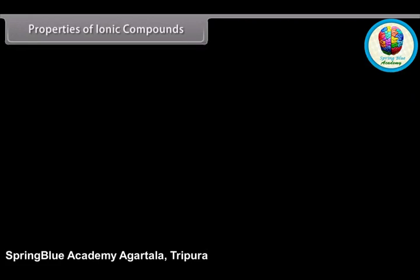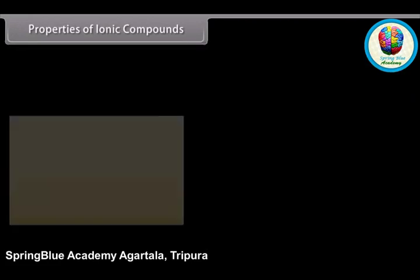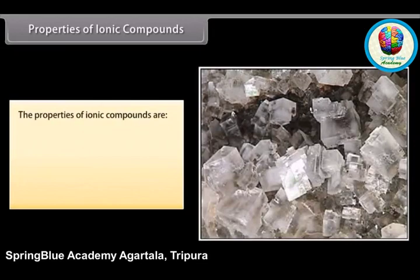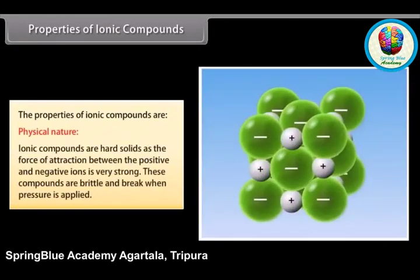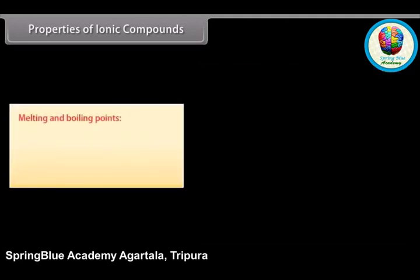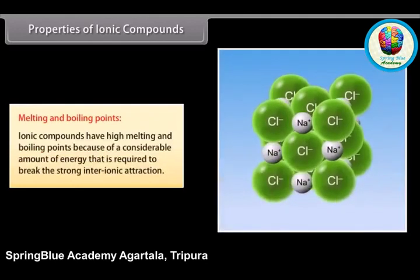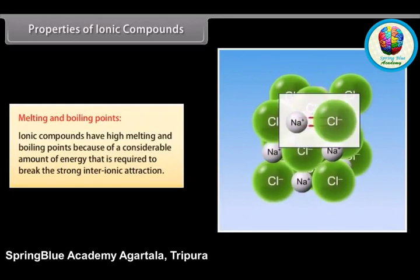Properties of ionic compounds. Ionic compounds are hard solids as the force of attraction between the positive and negative ions is very strong. These compounds are brittle and break when pressure is applied. Ionic compounds have high melting and boiling points because a considerable amount of energy is required to break the strong inter-ionic attraction.